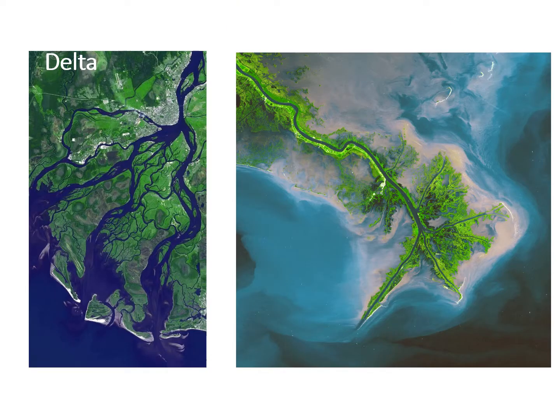A delta — we already talked about this — but you can see all the greenery here, a very nutrient-rich area because of all the sediment and nutrients being dropped off. A delta can be affected later on if a dam is built, because it can stop sediment flow and nutrient flow.